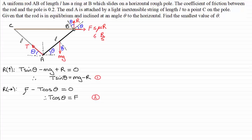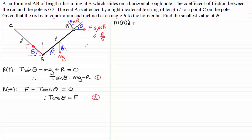Now we take moments about A, with clockwise as positive. Starting with the weight mg: splitting it into a component along the rod and one perpendicular to it, the component along the rod passes through A and has no turning effect. The component perpendicular to the rod is mg cos theta, and the distance to A is L over 2, giving a moment of mg cos theta times L over 2.